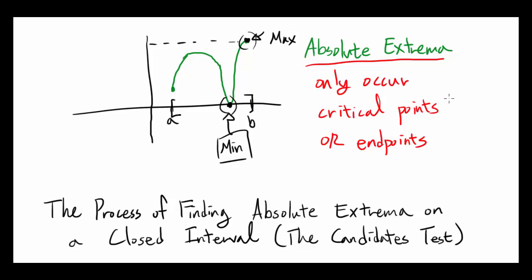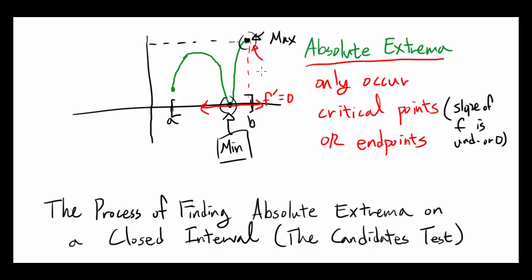In this case, our relative minimum is at the critical point. A critical point is where the slope of our function — f' — is undefined or zero. Here, the slope of the tangent line is zero, so f' is zero, meaning this point is a critical point. And you can see that at this point we have an absolute minimum. For the maximum, it's at the endpoint, when x is b.